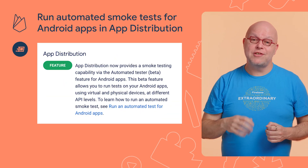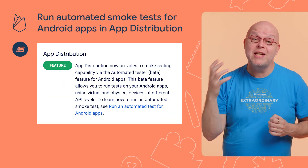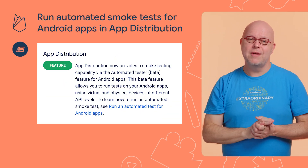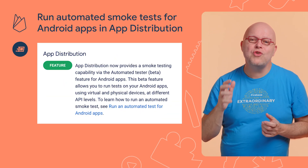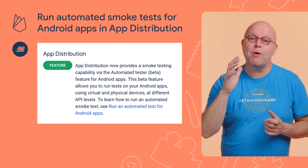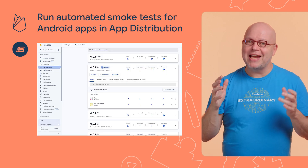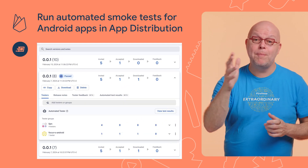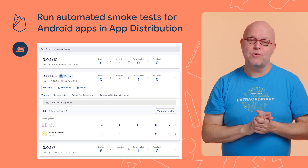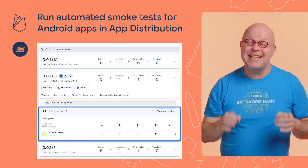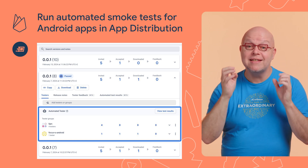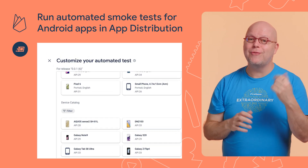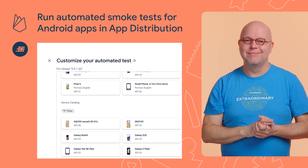If you're using Firebase to distribute pre-release builds of your Android apps to your testers, you can now also get automatic smoke tests for those builds. You can enable these automatic tests after you upload the build to App Distribution by adding the automated tester. You can select what devices it runs on, or you can leave it to Firebase to decide.